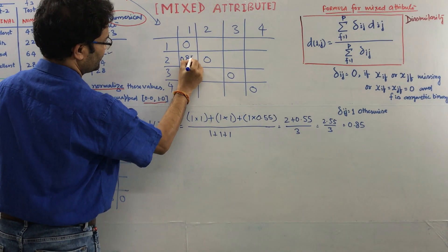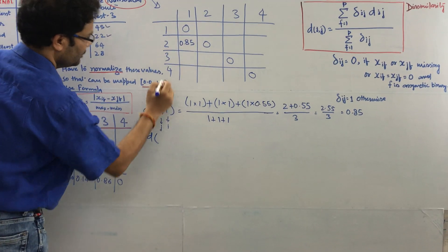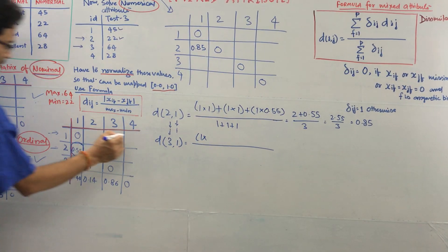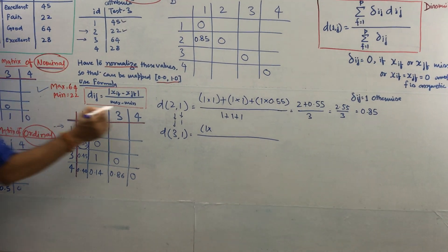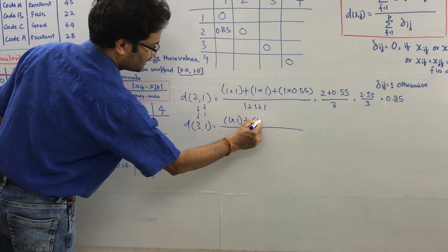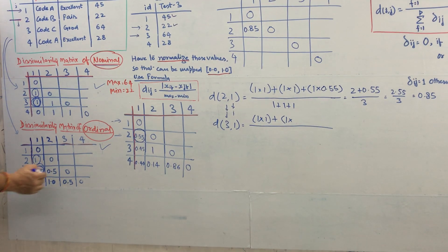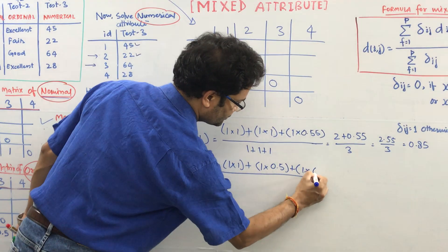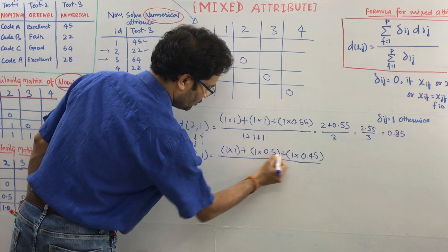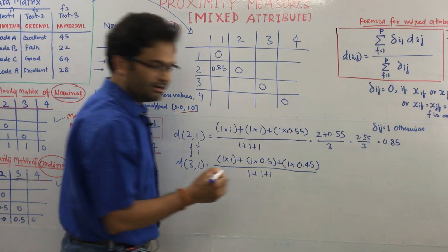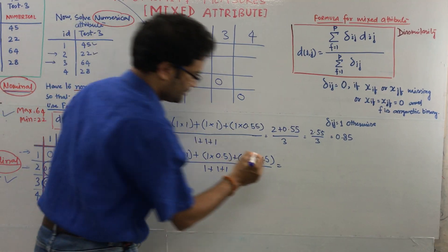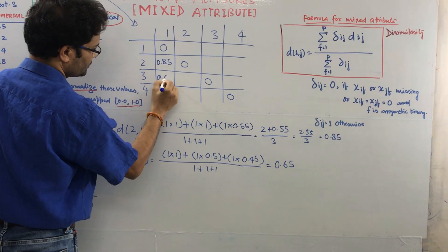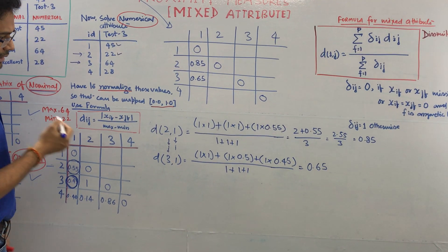Take another one, d(3,1). Again delta_ij 1. What is delta 3-1 here? In this case this one. Take 1 plus 1 delta_ij, and from this matrix 0.5 plus 1 into here 0.45. And 1, 1, 1. If you calculate this value it will become 0.65.